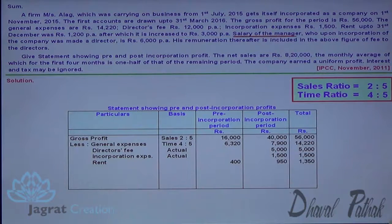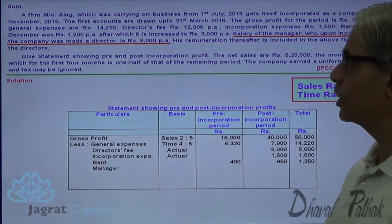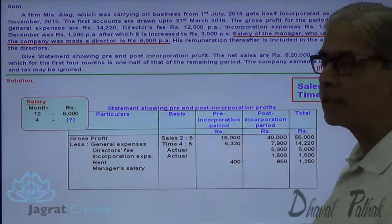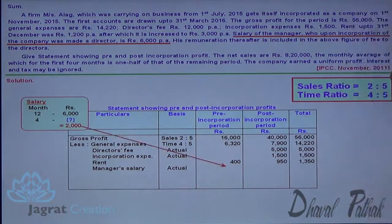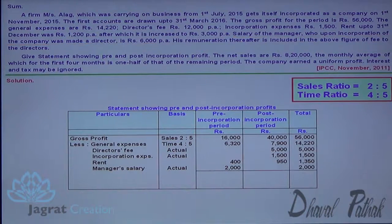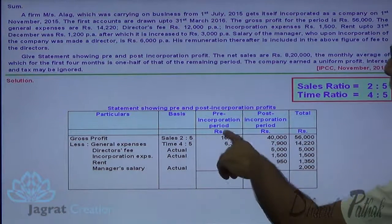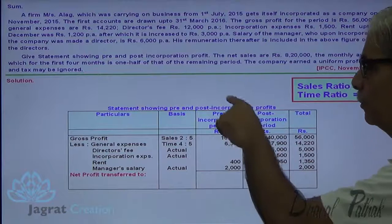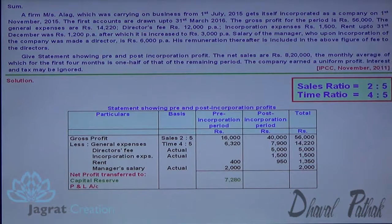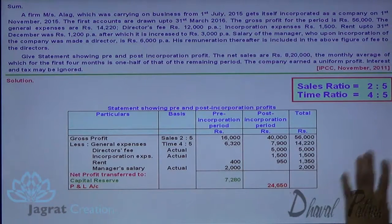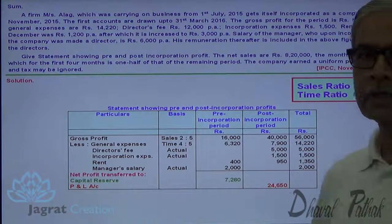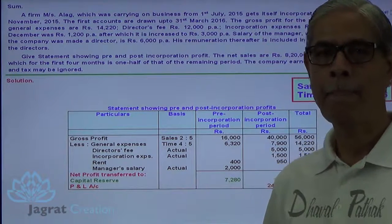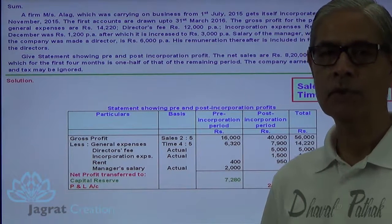Salary of the manager: the pre incorporation period is 4 months out of 12. Salary is 6,000 per annum, so for 4 months it is 2,000, charged to pre incorporation. From income, expenses are deducted. You will get the net profit — in the case of pre incorporation, it is transferred to capital reserve, and in the case of post incorporation, it is revenue profit. This is how bifurcation of net profit is made between pre and post incorporation periods. I feel that you have followed all these things. Thanks to all of you.